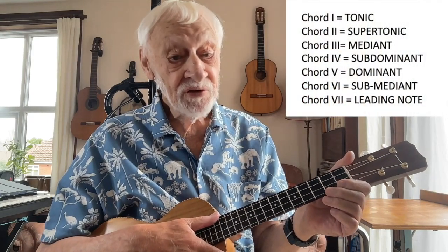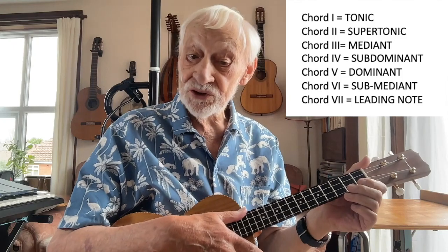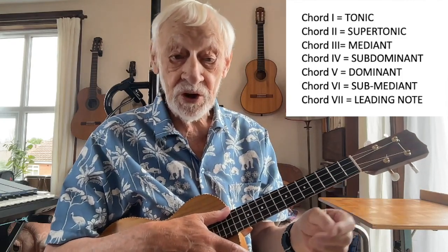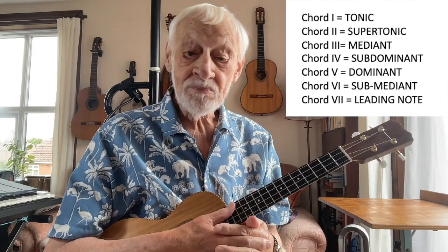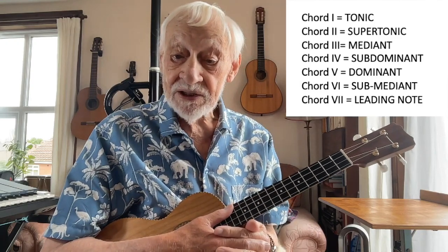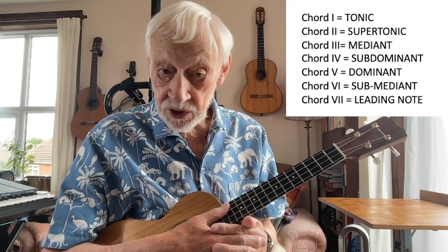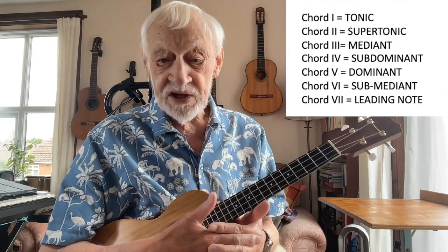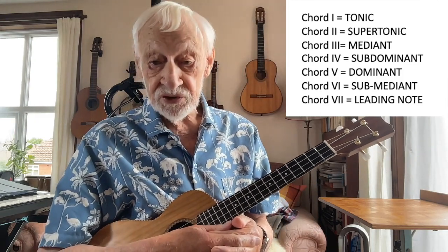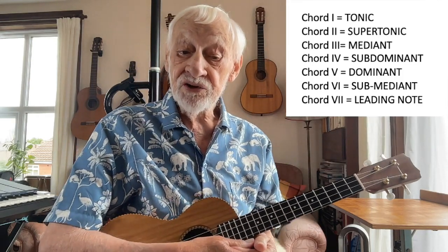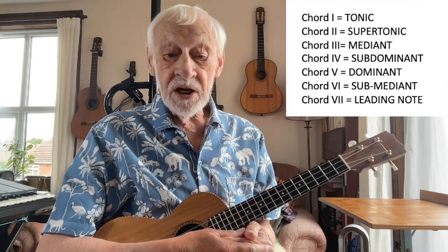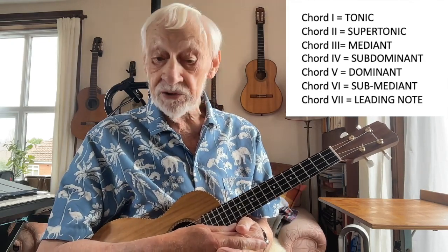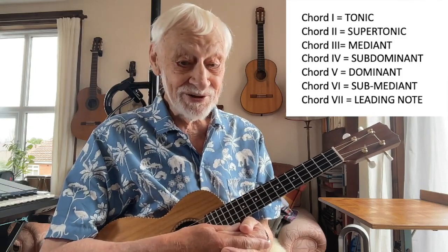All the notes of the scale have names, and a chord built on the fifth note of the scale is called the dominant. It's the most important note after the tonic, or first, or home note. Add a note seven letter names above the dominant's note — a minor third — and it's called a dominant seventh. It feels unsettled and very strongly wants to resolve onto the tonic or first chord. Note that in a dominant seventh chord, the seventh note is a tone below the tonic, but in major seventh chords, it's a semitone.